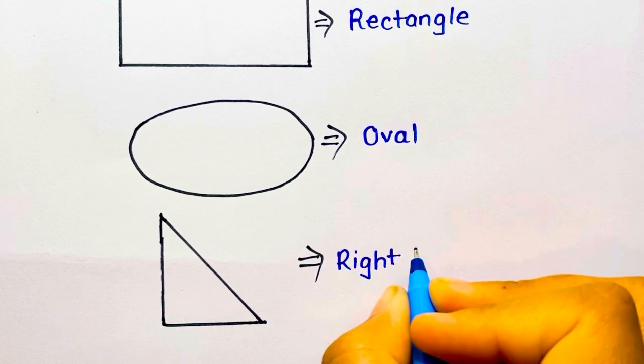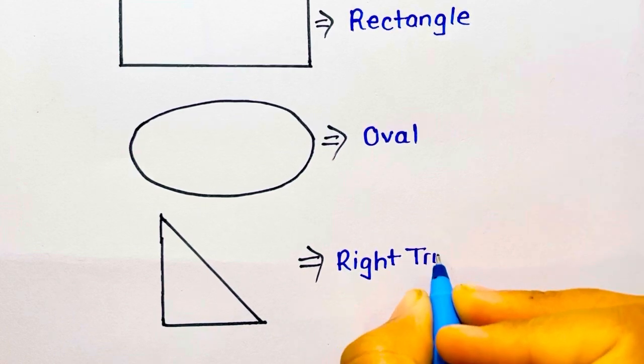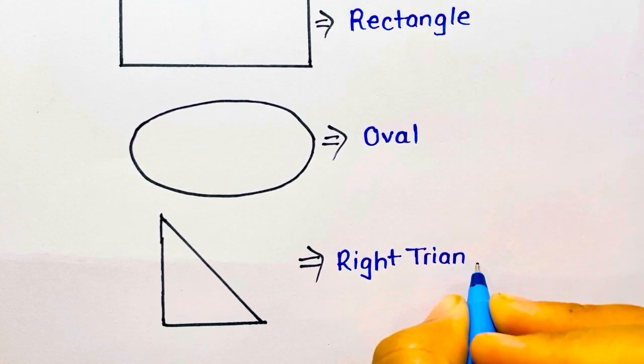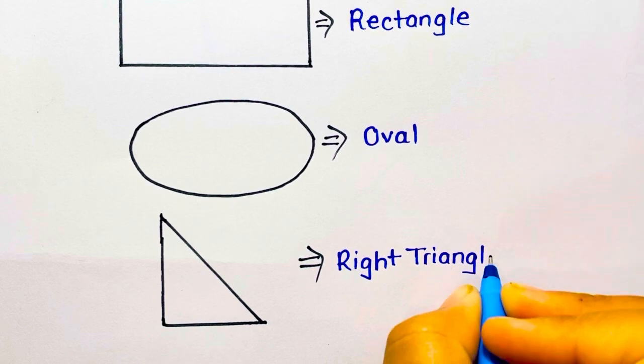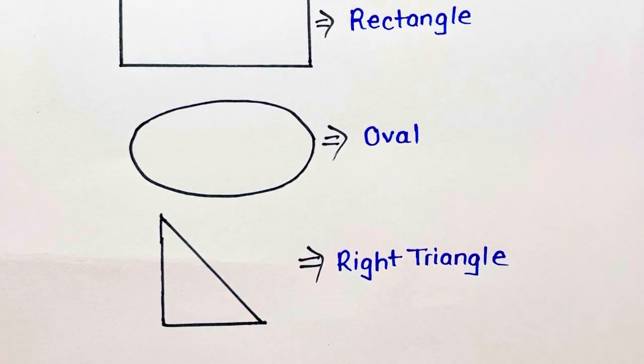This is right triangle. R-I-G-H-T. Right. T-R-I-A-N-G-L-E. Triangle.